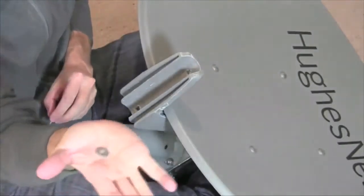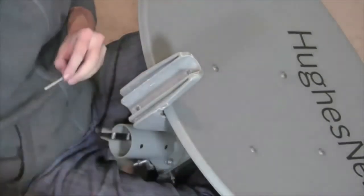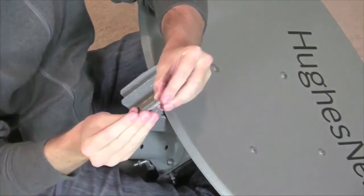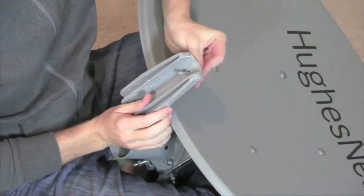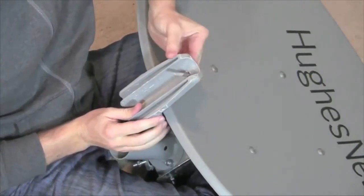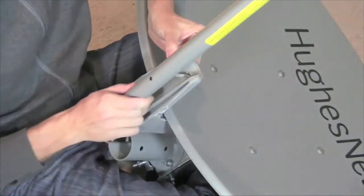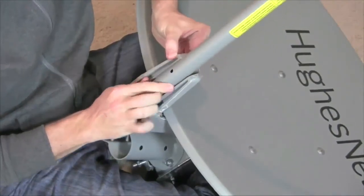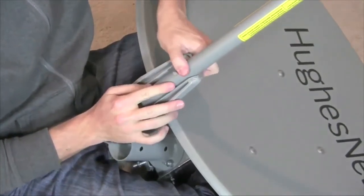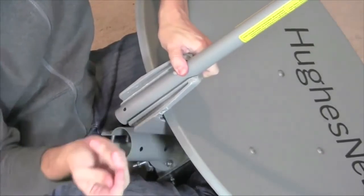Slide a flat washer onto the bolt and insert it into the hole at the base of the reflector bracket. Put the feed arm in place and slide a lock washer onto the bolt.